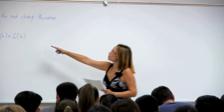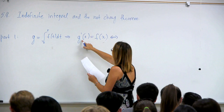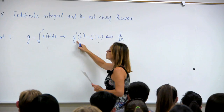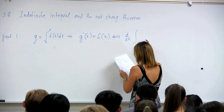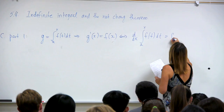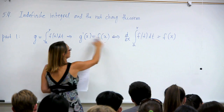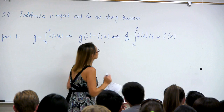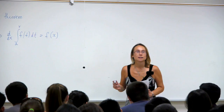For the purposes of this lecture, I'm going to rewrite exactly the same thing using a slightly different notation. Instead of g', I'm going to use d/dx, and for g(t) I'm going to use its definition: from a to x, f(t) dt, and that equals f(x). This is exactly the same thing, except I'm using a different notation for the derivative and including the definition of g.